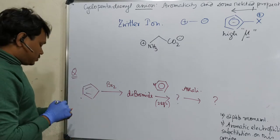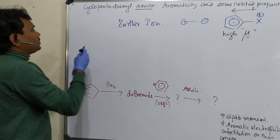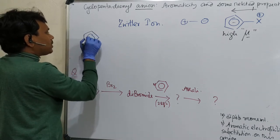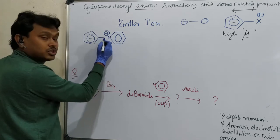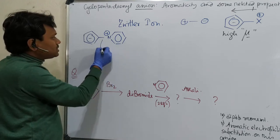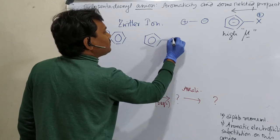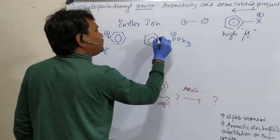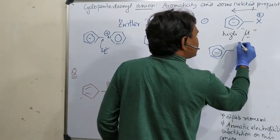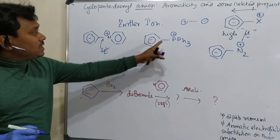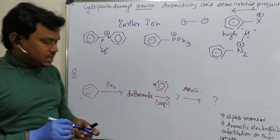Different types of zwitterionic structures are possible. For example, you may have a pyridinium-type zwitterion, where the cyclopentadienyl anion is attached to a pyridinium cation via the nitrogen lone pair, which is in an sp2 orbital — so this is an sp2 bond. Similarly, you may have a triphenylphosphine derivative — a phosphonium ylide type. Another possibility is a diazonium derivative. In all cases, the cationic parts are stable enough to exist in this zwitterionic form.